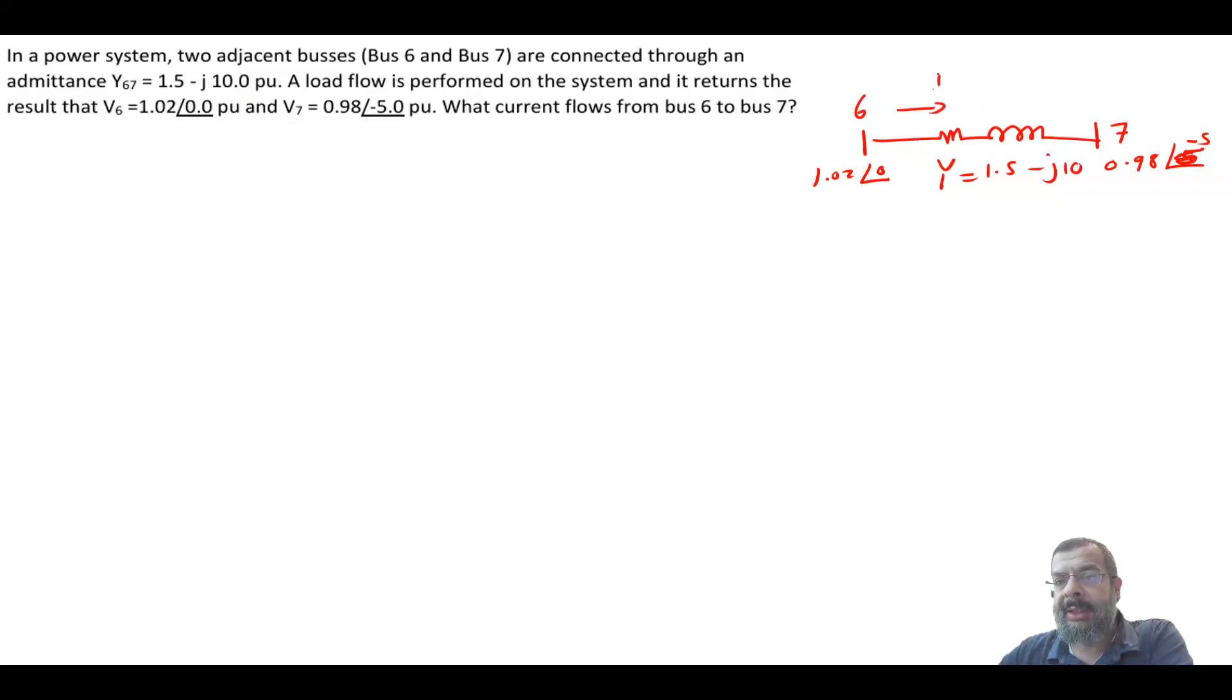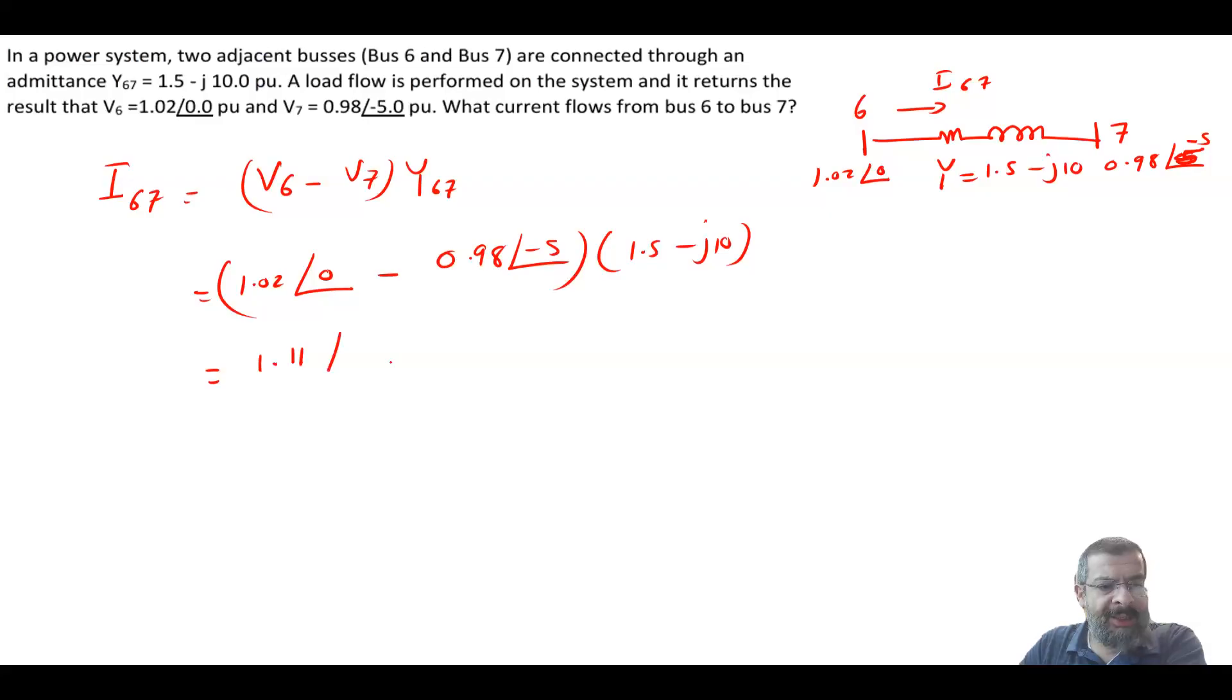Very straightforward problem. So I from 6 to 7 is equal to V6 minus V7 times the admittance from 6 to 7, which is equal to 1.02 angle of 0 minus 0.98 angle of minus 5 times 1.5 minus j10. Everything in per unit. So the current would be 1.11 angle of minus 32.7 per unit. Very easy question.